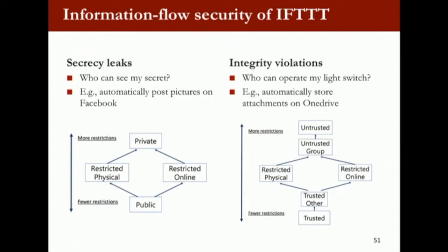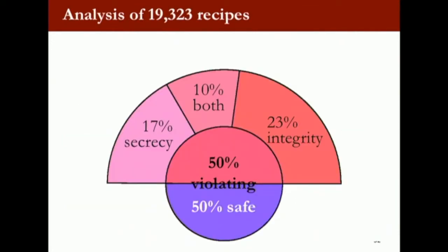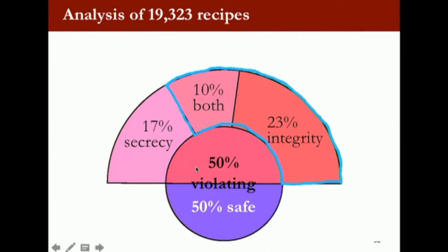In terms of analysis results, we looked at about 20,000 unique recipes. About half of them have some problem — roughly 33% have integrity problems, 27% have secrecy problems, and about 10% have both. This is significant: if the designers had thought about information flow, they could have issued warnings to users. We're jumping over the detailed results, but the overall point is that information flow analysis can reveal serious issues in these rule-based IoT frameworks.